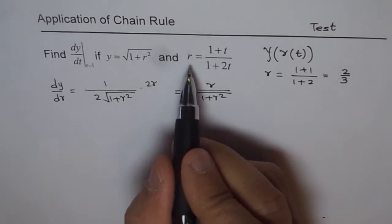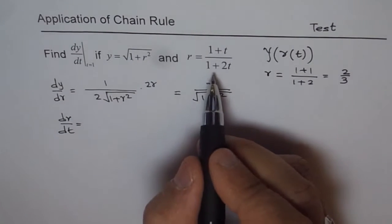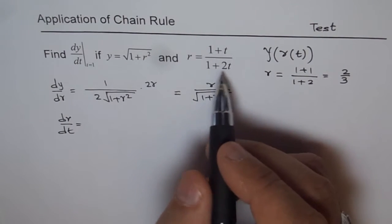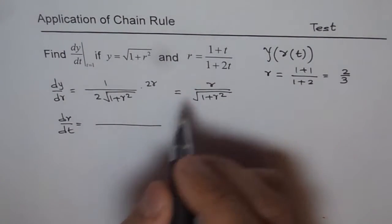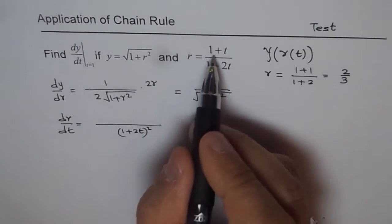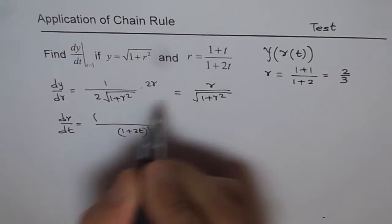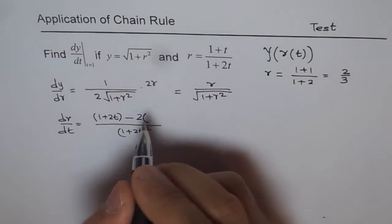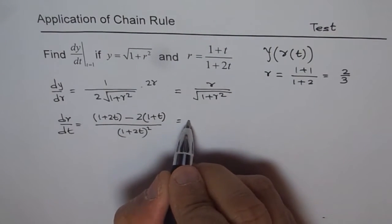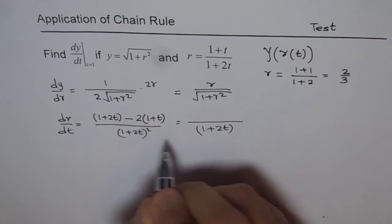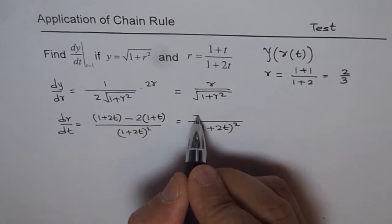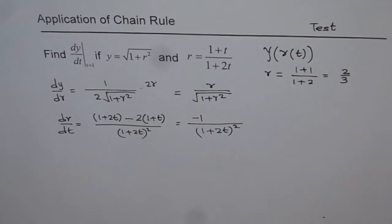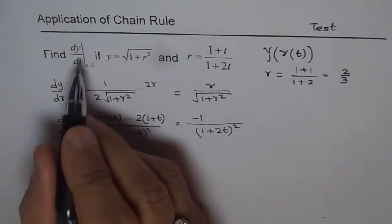Now find dr/dt. We apply the quotient rule. The square of the denominator is (1 plus 2t) squared. The derivative of the numerator (1 plus t) is 1, times the denominator, minus the derivative of the denominator (which is 2) times the numerator (1 plus t). Simplifying: 1 plus 2t minus 2 minus 2t gives us minus 1 in the numerator. So dr/dt equals minus 1 over (1 plus 2t) squared.